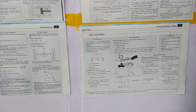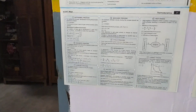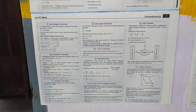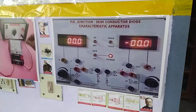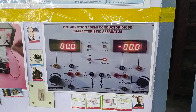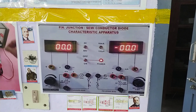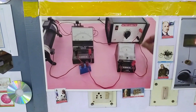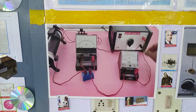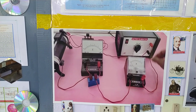This mind map covers heat transfer and thermodynamics. This is the PN junction semiconductor diode characteristics apparatus, and this is the Ohm's law equipment again for series and parallel resistance.